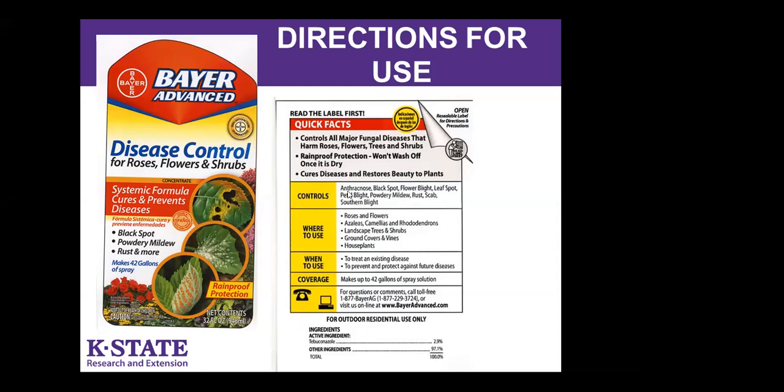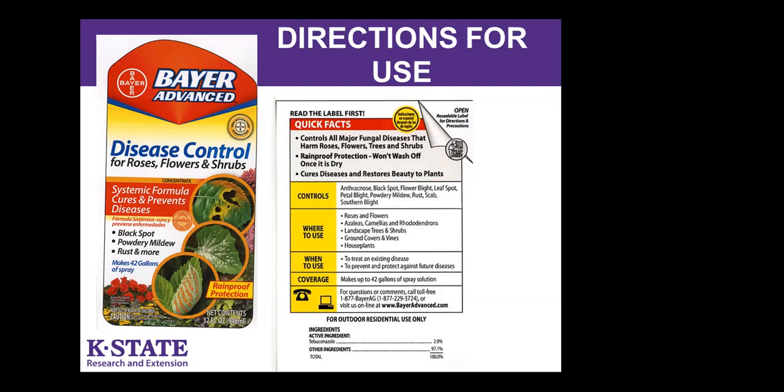What will this product control? Anthracnose, black spot, flower blight, leaf spot, petal blight, powdery mildew, rust, scab, and southern blight. If it's not listed on the label, it's likely not going to control it. Captain Jack's Dead Bug can be used in home gardens, lawns, and ornamentals, and gets very explicit as to what edibles you can use it on. Again, if the crop is not listed, you cannot use it on that crop — you would have illegal residues on the fruit that you plan to consume.